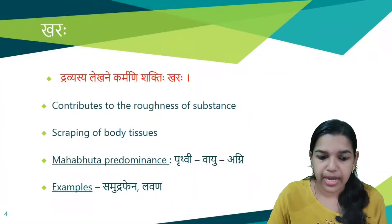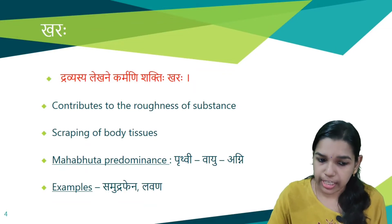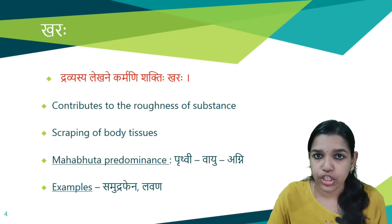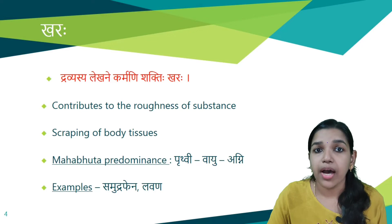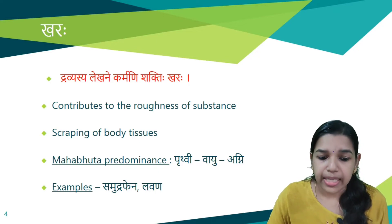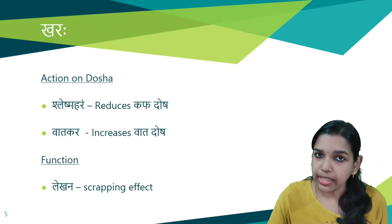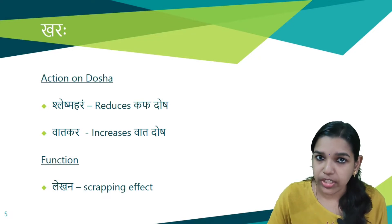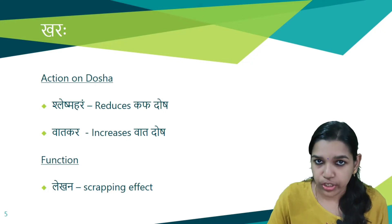Next is the opposite of Shlakshna, that is Khara guna. Dravyasya lekhani karmani shakti hi khara. That which contributes to the roughness of a substance is called Khara. It also helps in scraping of the body tissues. Prithvi, Vayu, and Agni are the predominant Mahabhudas. Examples are Samudra fena, lavana, etc. The actions carried out are Shleshma hara, that is reduces kapha dosha, and vata kara, that is increases vata dosha. The function is lekhana, that is the scraping effect.